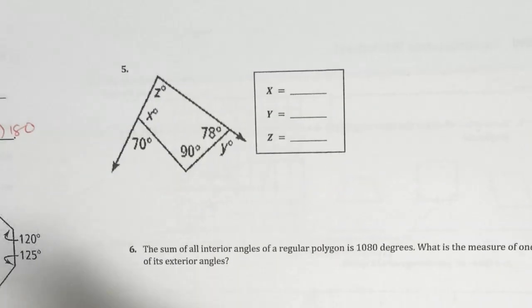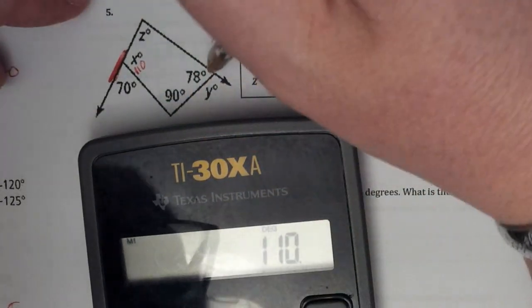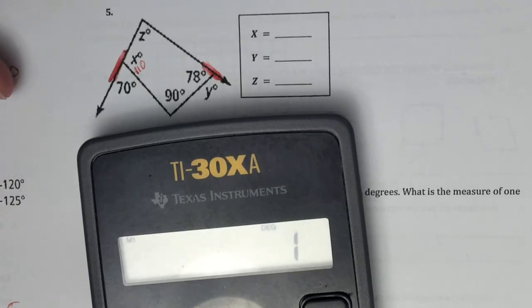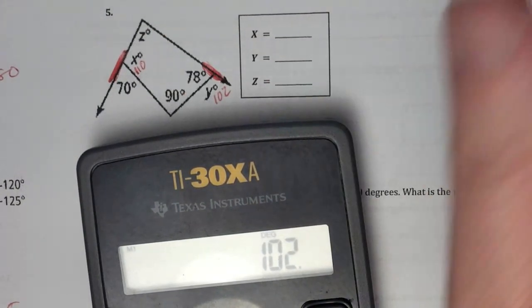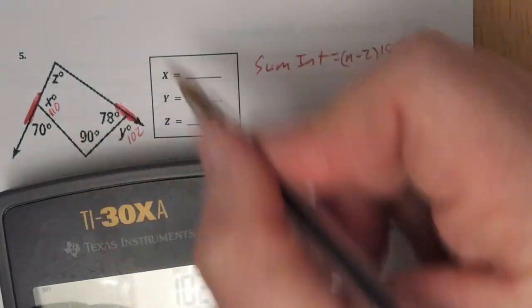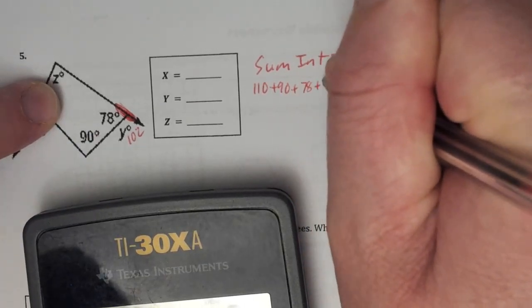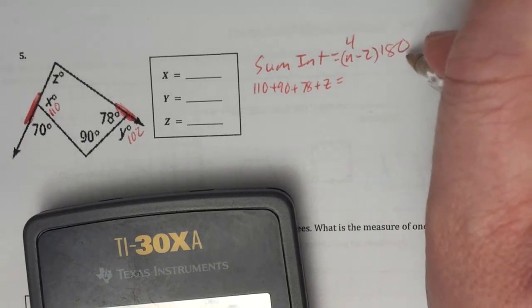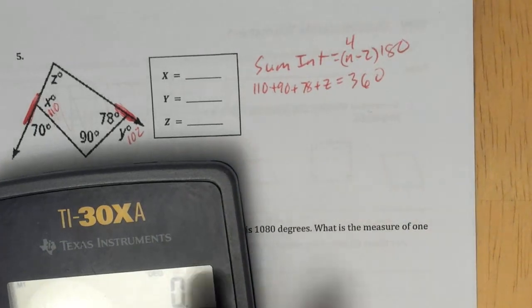Keep finding stuff until you can't anymore. Here's a straight line: 180 minus 70 equals 110. These two add up to 180 degrees, so 180 minus 78 equals 102. Now I know that all four of these — that's the sum of interior equals N minus 2 times 180. So 110 plus 90 plus 78 plus z equals 4 minus 2 times 180, which is 360. So all the inside angles add up to 360 degrees, then you solve for z.